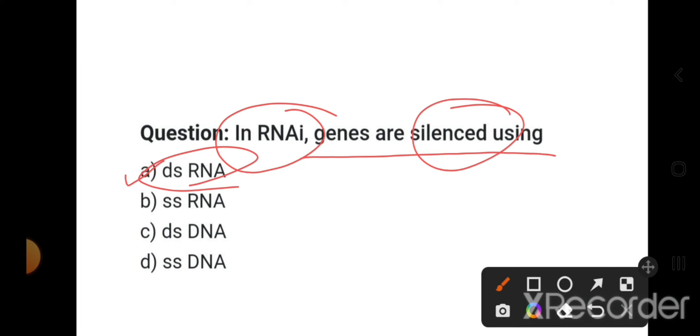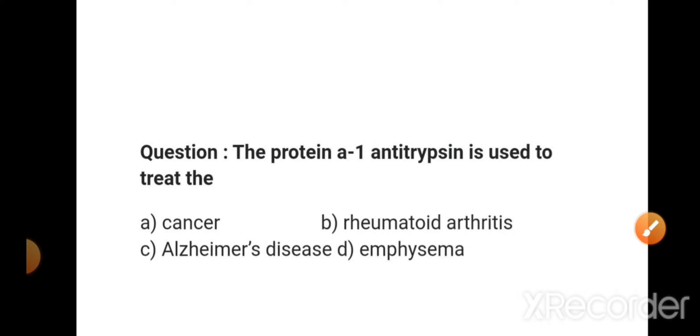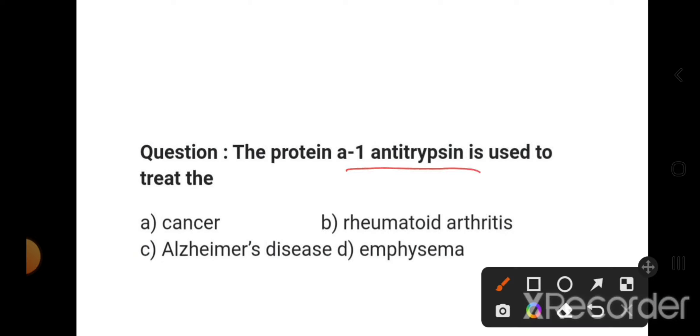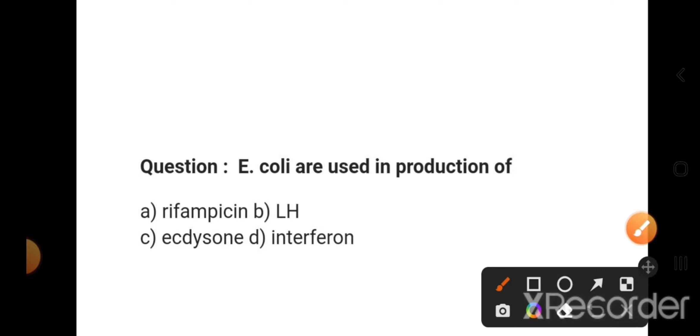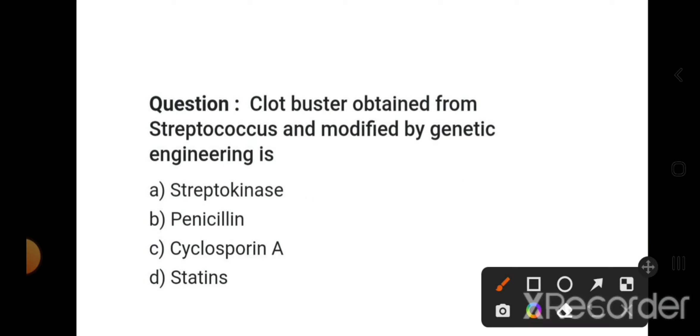The protein A1 anti-trypsin is used to treat emphysema. This happens when there is alveolar inflation in the lungs. Blood clot is dissolved by a chemical obtained from Streptococcus, an enzyme called Streptokinase, which is produced through genetic engineering.